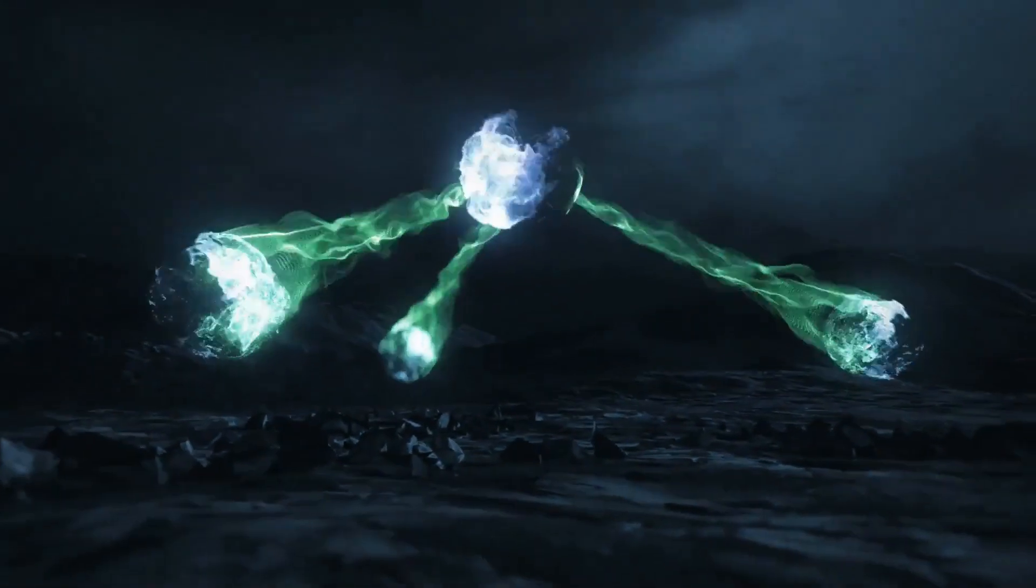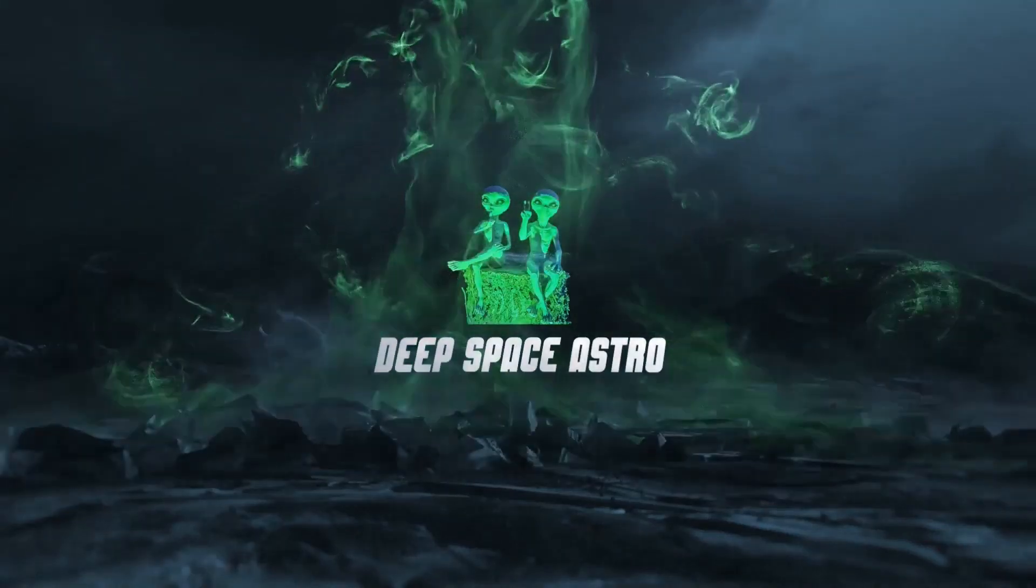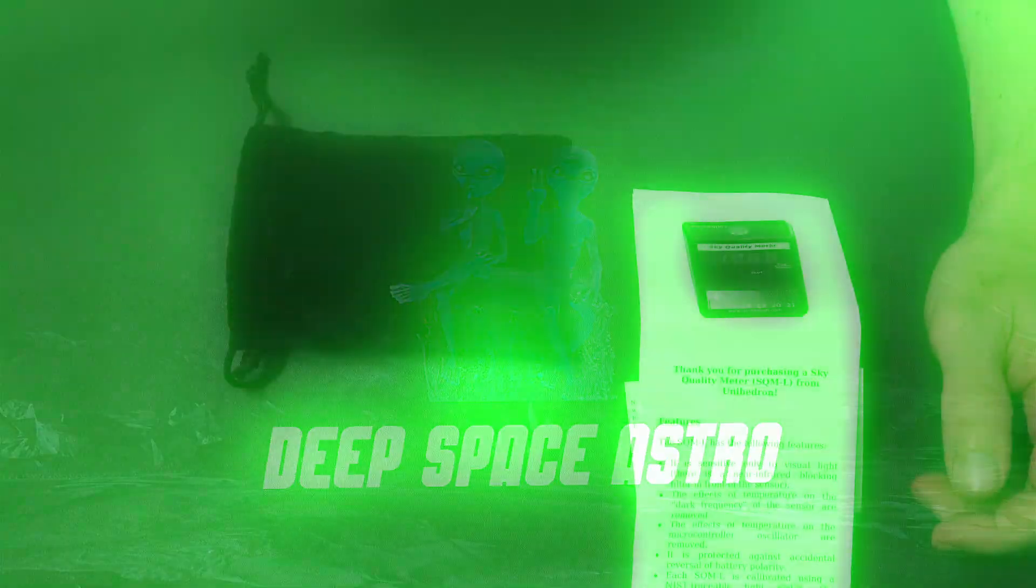So ever wonder how dark your skies really are? There's actually a device out there that allows you to do just that by measuring the sky brightness. This cool little device is called the Sky Quality Meter by the company Unihedron, and they were kind enough to send me one free of charge for testing and review purposes for this video. So let's check it out. My name is Rich and you're watching Deep Space Astro.